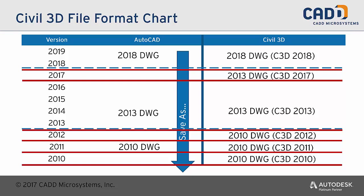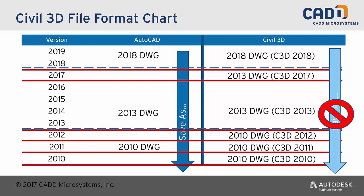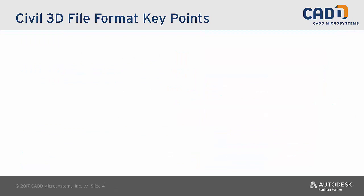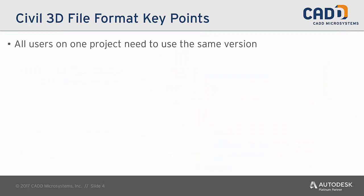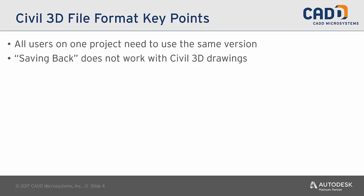Once they hit 2013, they stayed where they were until the release of 2017, where another cutoff occurred. They grew again in 2018, and the 2018 and 2019 versions can use the same Civil 3D object types. It's also important to remember that you cannot just use a Save As with Civil 3D, because these objects cannot be saved back to the previous version. So it's very important for all users on one project to use the same version — agree ahead of time that you're going to use Civil 3D 2018 or 2017, for example. Because if someone uses a newer version and saves a file, others using the previous version will no longer be able to open it, since saving back does not work.